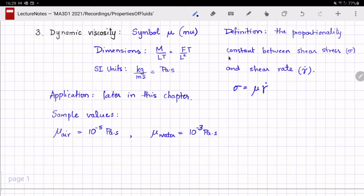It has dimensions of force times time divided by length squared, which in the MLT system is M divided by LT. It has SI units of kgs per meter second which equals Pascal times seconds. Sample values of viscosity are 10 to the minus 5 Pascal second for air and 10 to the minus 3 Pascal second for water.